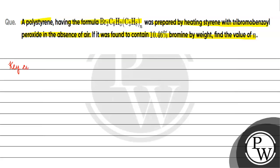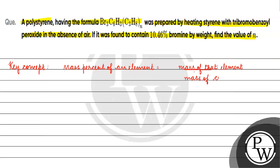The key concept for this question is mass percent of an element. Mass percent of an element is basically equal to mass of that element divided by mass of the compound, multiplied by 100.